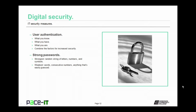Digital security also wouldn't be complete without user authentication. There are three main ways to authenticate a user: what you know, like a username and password; what you have, like a security token; or what you are, biometrics. You can combine these factors to increase your security level.